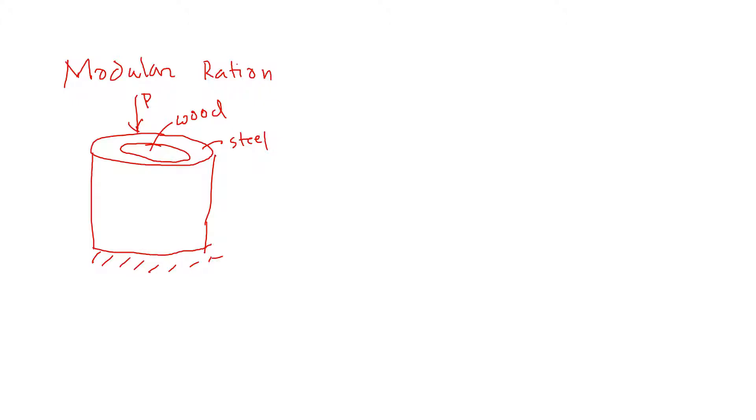So in that case, we can write that delta of wood is equal to the deformation from the steel. Delta, if we say within the proportional limit approach, we can say P L by A E of wood is equal to P L by A E of steel.